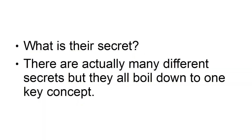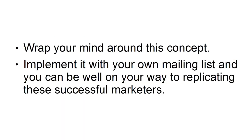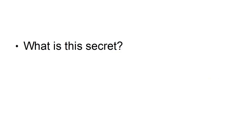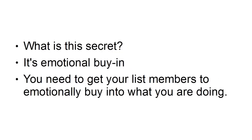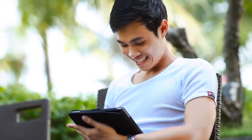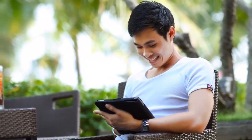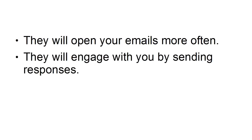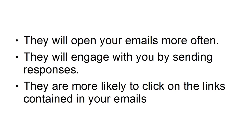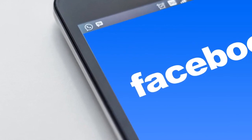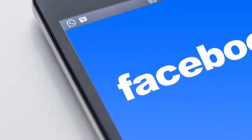What is their secret? There are actually many different secrets, but they all boil down to one key concept: emotional buy-in. You need to get your list members to emotionally buy into what you're doing. These members must be made to feel emotionally invested in the success of your list. When they feel they have some skin in the game, they are more likely to read your emails, open them more often, engage by sending responses, click on links, and share your email by forwarding it to friends or posting it on Facebook.